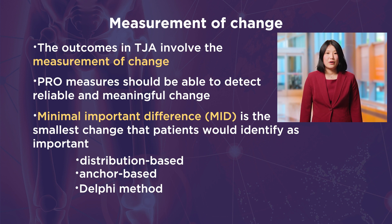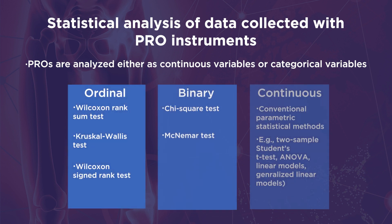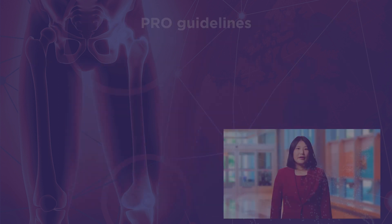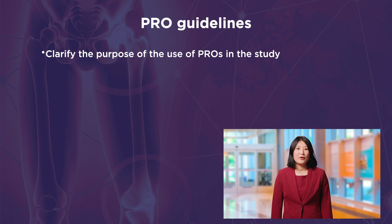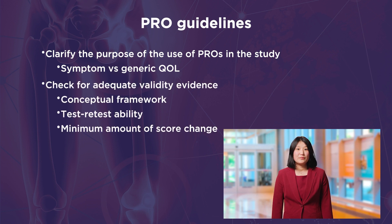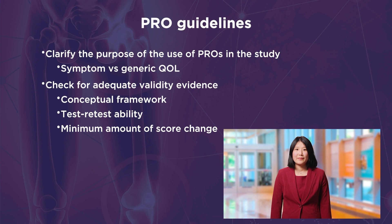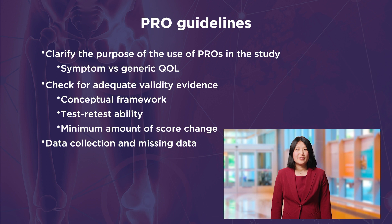Meaningful change in commonly used PROMs in arthroplasty is an active area of research. In general, statistical analysis is the same as for other outcome variables. The choice of methods depends on whether the outcomes are ordinal, binary, or continuous. Here are some practical guidelines when interpreting PRO-based studies. First, clarify the purpose of the study and whether the PRO measures disease-specific symptoms or generic QOL. Second, check to make sure there is adequate validity evidence to support the interpretations of scores for proposed uses of the PRO — for instance, is the measure able to identify differences in scores over time in patients whose health is known to have changed? Lastly, determine how the data are collected, the amount of missing data, and whether the study sample is representative of the target population. For instance, sicker individuals are less likely to respond to surveys, causing a potential selection bias.